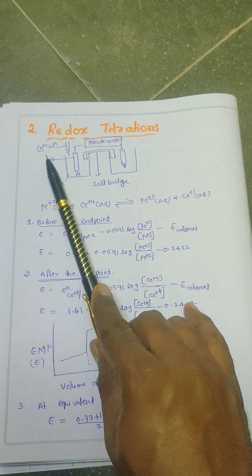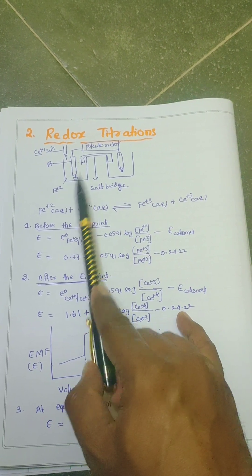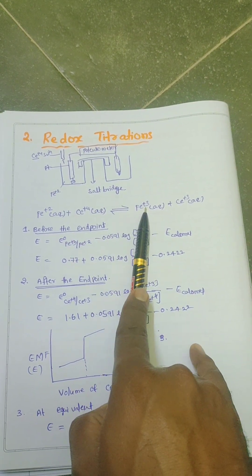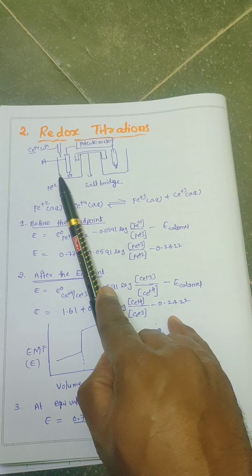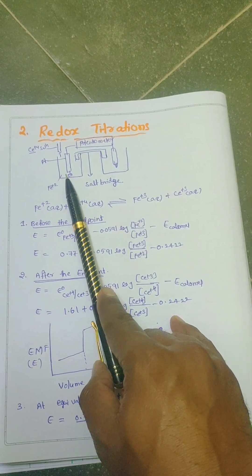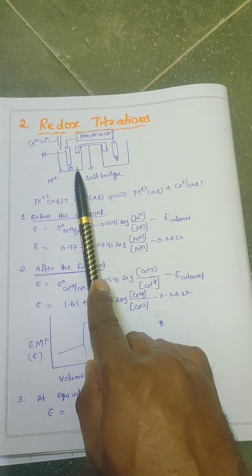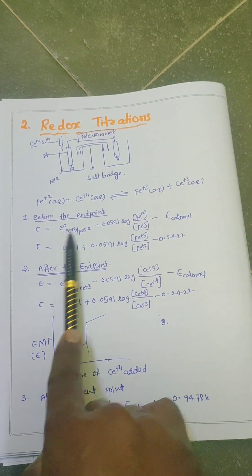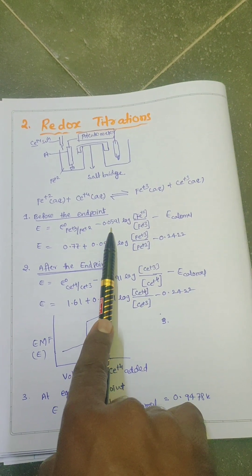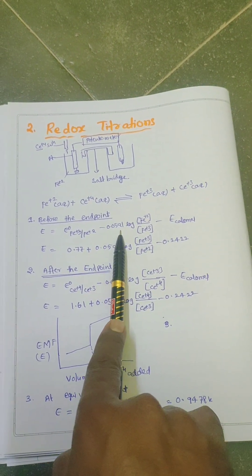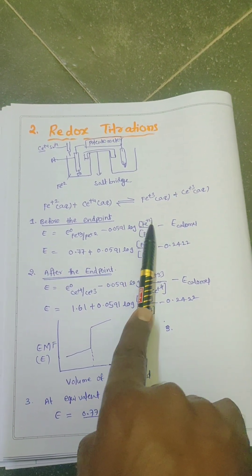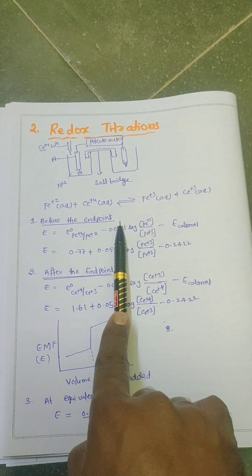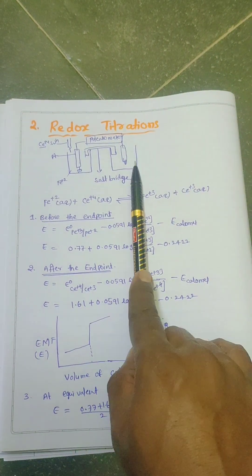Before addition of ceric ions, the solution contains only ferrous ions. As we go on adding ceric ions, ferrous ions are gradually oxidized to ferric ions, and the platinum electrode behaves as an iron electrode. Before the end point, the Nernst equation for the cell can be written as: E = E°(Fe³⁺/Fe²⁺) − 0.0591 × log([Fe²⁺]/[Fe³⁺]) − E(calomel). This equation is used to calculate the EMF of the cell before the end point.